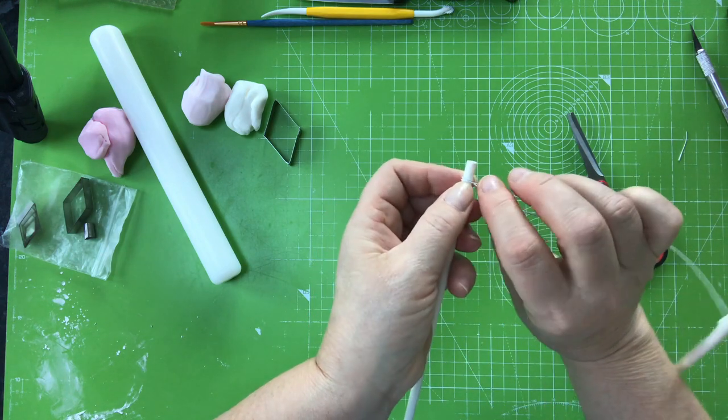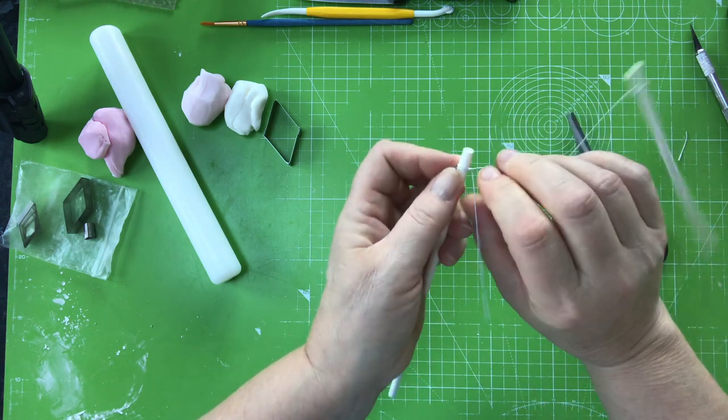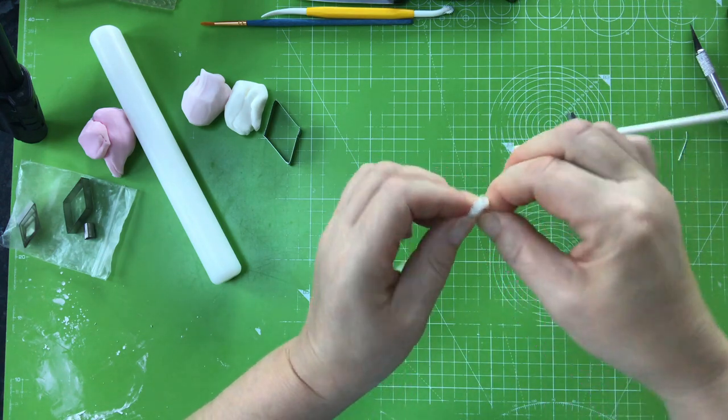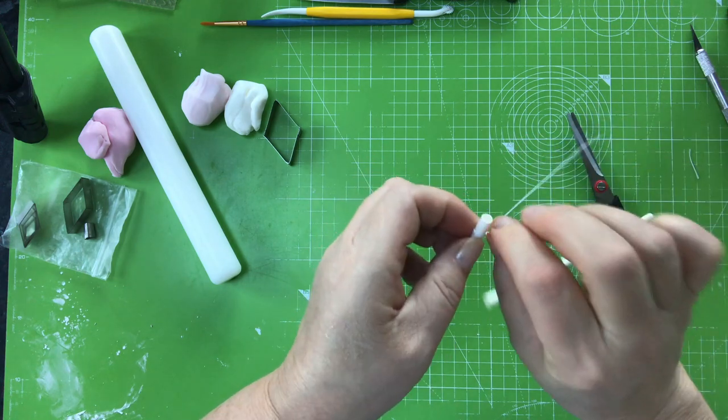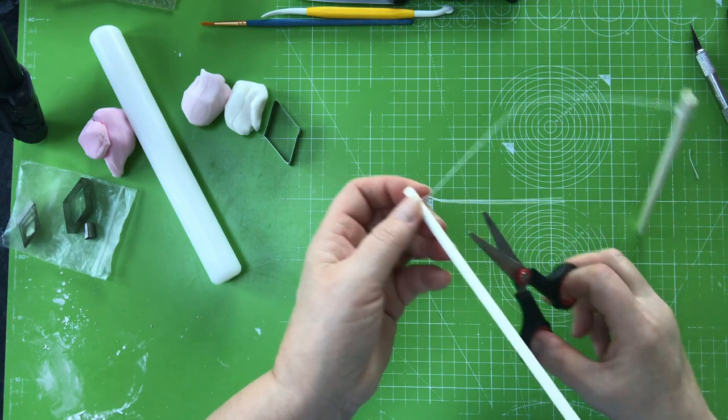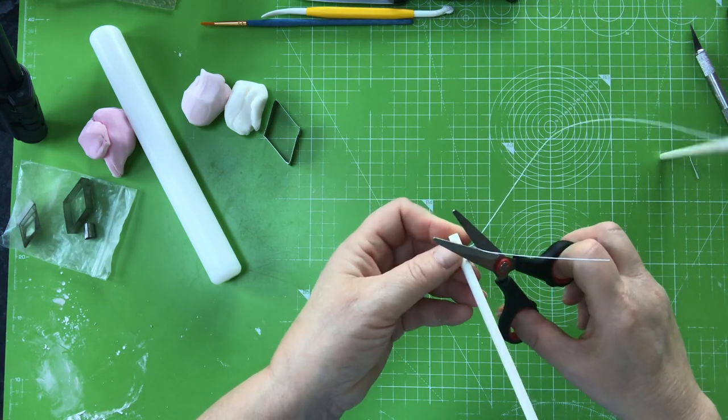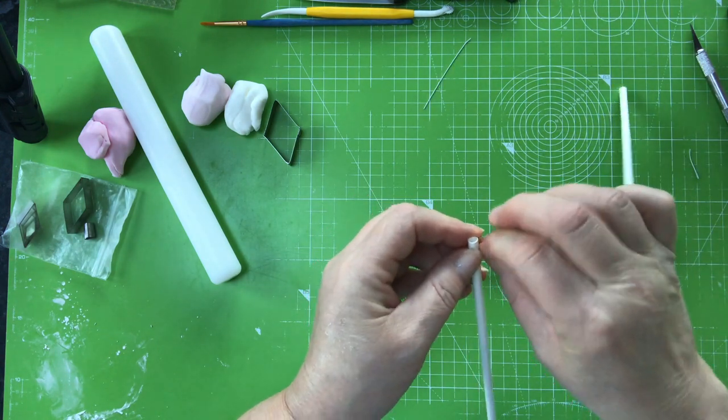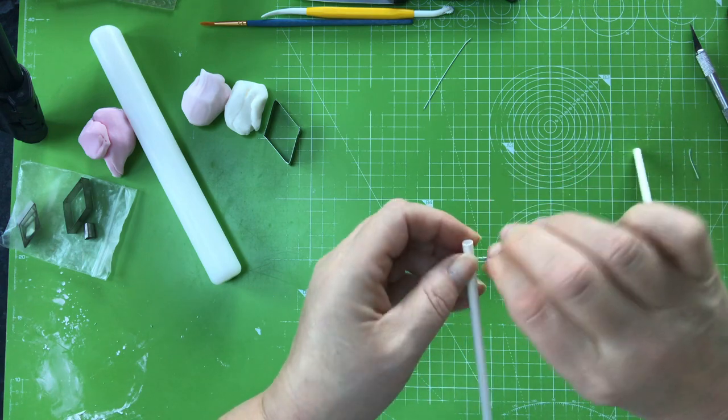So you've got that on and just twist it round, nice and tight so that's not going to move. Just snip it. Don't worry about it if it does stick out a little bit because your paste will cover it.